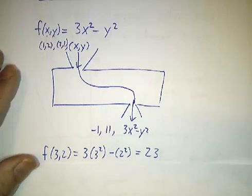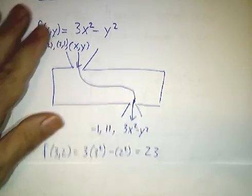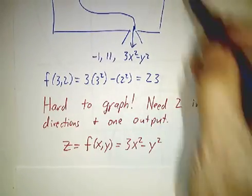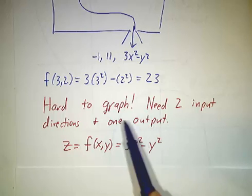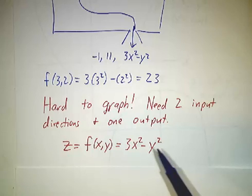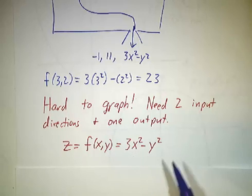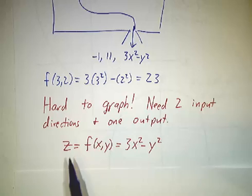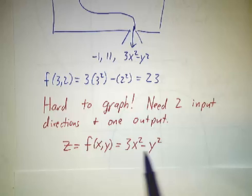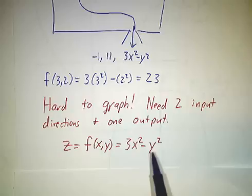Now the trouble with this is drawing a picture of it is pretty hard because normally when you draw a picture, you draw the input on one axis, the output on the other axis. Now there are two inputs, so you need three dimensions to draw it. Some people are pretty good artists and they can draw a pretty nice picture of something three-dimensional on two-dimensional paper. I'm not one of these people. But in three dimensions, you could think of z as being a function of x and y, z equals 3x squared minus y squared, and that surface in three dimensions would be the graph of this function.